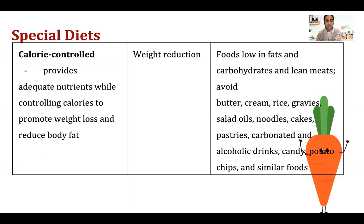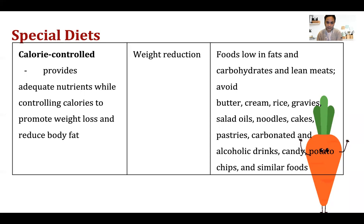Caloric control diet is the opposite — it's for weight reduction or obese patients. The food sources are low in fats and carbohydrates and lean meats. Foods to avoid include butter, cream, rice, gravy, salad oils, noodles, cakes, and pastries, because these are the foods that will cause weight gain.